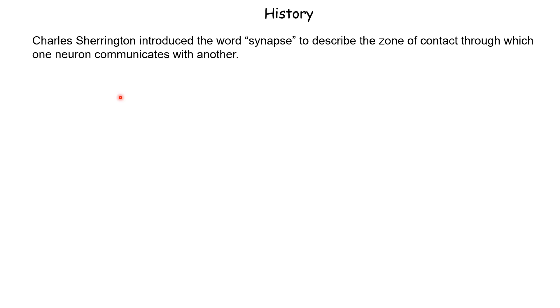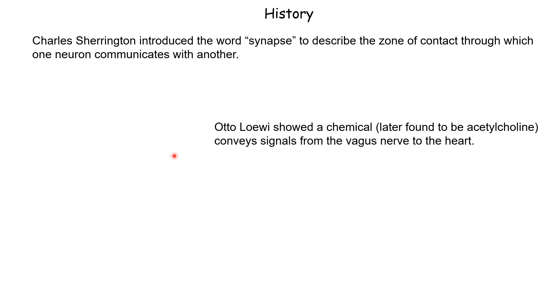Although people have been looking at synapses for a very long time, it was not possible to see the structure of the synapse in great detail with normal microscopy. So it was not clear how synapses function — whether the communication was electrical or whether it was in the form of chemicals. A German scientist Otto Loewi later showed that the communication was chemical, at least at the synapse between the vagus nerve and the muscles of the heart.